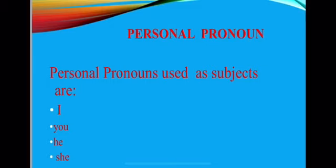Pronouns can be subjective or objective. Pronouns can be subjective when we talk about a person or a thing. For example: I'm going to school. She played with me. You look beautiful. They are playing football. In these sentences, I, she, you, they, etc. are subjective pronouns because they refer to a particular person, thing, etc.